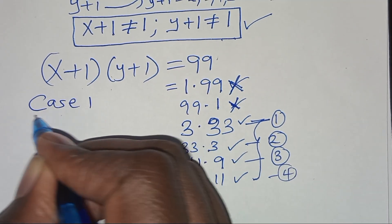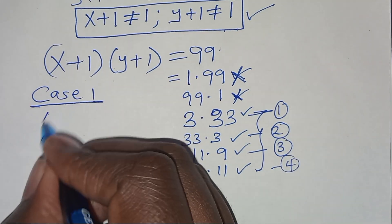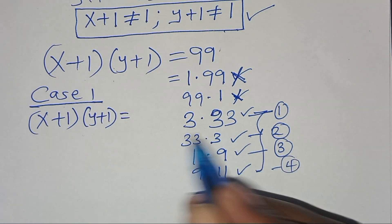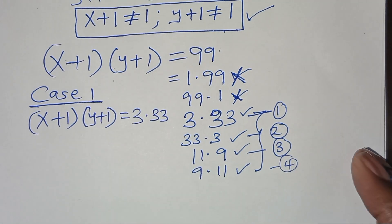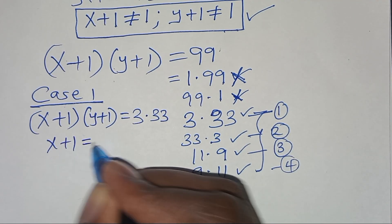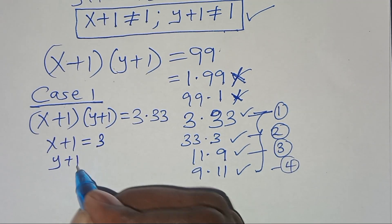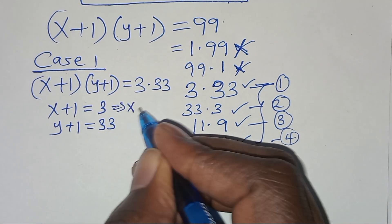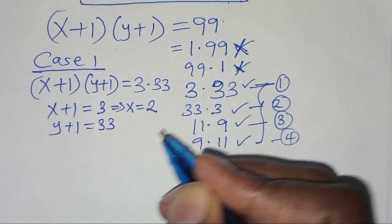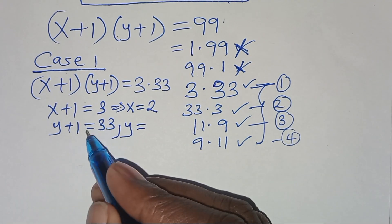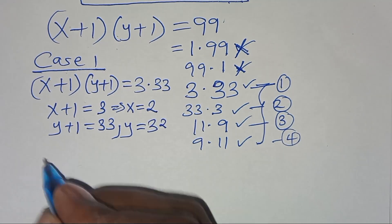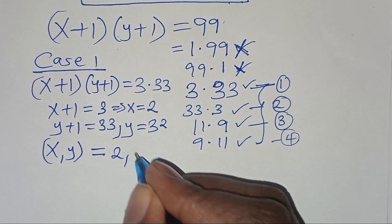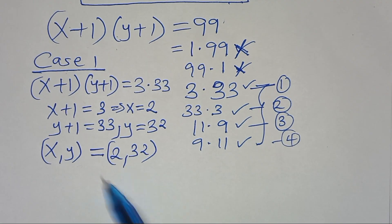Case 1: x plus 1 equals 3 and y plus 1 equals 33. This implies x equals 3 minus 1, which is equal to 2, and y equals 33 minus 1, which is 32. So in case 1, (x, y) equals (2, 32). This is the first solution.